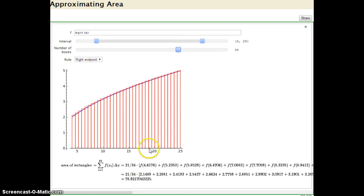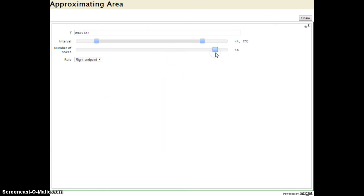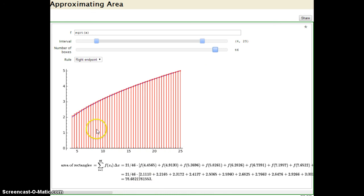Now we're using 34 boxes, or 34 rectangles, or 34 sub-intervals, so R_34 equals 78.9217. And let's see how much we can push this thing. R_46, there are 46 rectangles here, and the area of all 46 rectangles put together is 78.6.